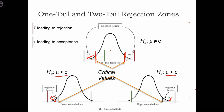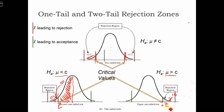For example, if alpha was 10% and we had a left-tailed test, the area in the left tail would be 10%, and we can find the z-score that forms that boundary using a standard table. Similarly, in a right-tailed test, we have 10% to the right, giving a positive z-score, while the left-tailed test gives a negative z-score.